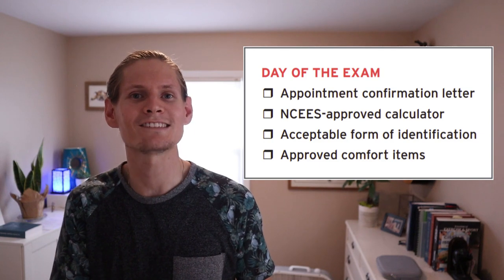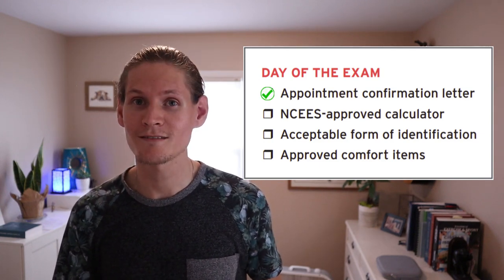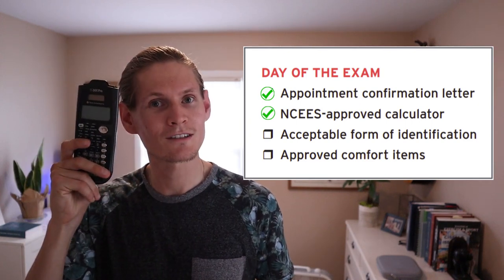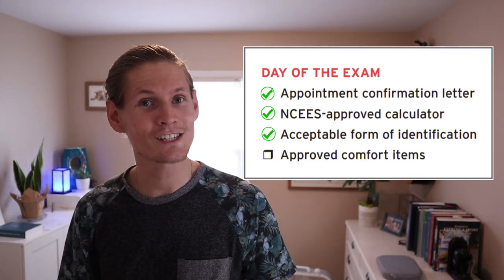On the day of the exam, you are instructed to arrive 30 minutes before your exam time, but I would suggest pushing that to about an hour to give yourself a buffer if something goes wrong on the way. When you arrive, you'll need to present a physical photo ID — a driver's license is fine, but digital IDs are not acceptable. The NCES-provided checklist includes your appointment confirmation letter, an NCES-approved calculator, an acceptable form of ID, and approved comfort items.